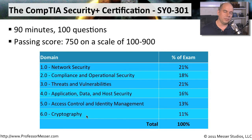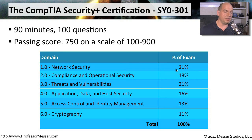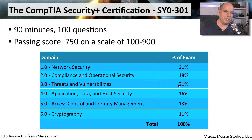One thing you'll want to look at is the percentage of coverage on the exam. For instance, cryptography is 11%, but network security is almost twice as much at 21%. Threats and vulnerabilities is also 21%. So when you're planning which topics to study, keep in mind just how much of those particular domains will be asked of you when you get into the exam.